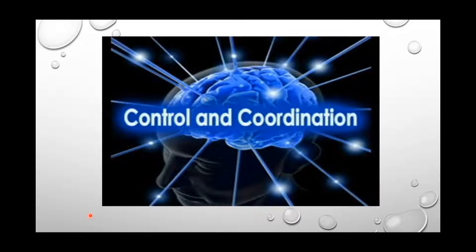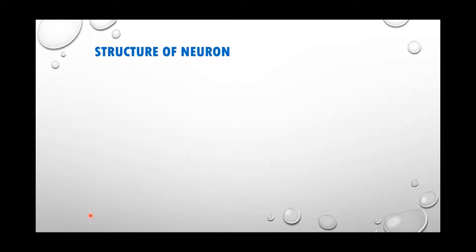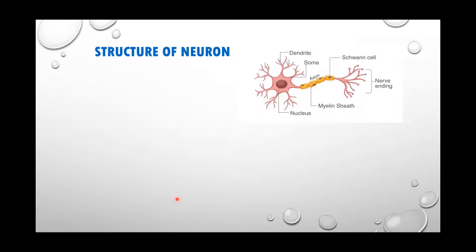For these stimuli, our body or any multicellular organism provides a very controlled movement. This controlled movement is provided by the nervous system in animals — it is a very coordinated system. The basic unit of the nervous system is a nerve cell, called a neuron. Here you can see the structure of a neuron with its dendrite.